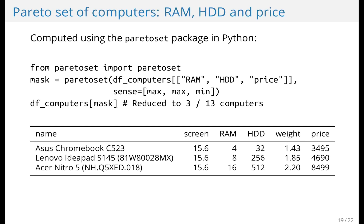So if I want to minimize price and maximize RAM and hard drive size, I could write it like this using the Pareto set package in Python, which is a package that I've written for these kinds of computations. This would reduce the dataset from 13 to 3 computers.